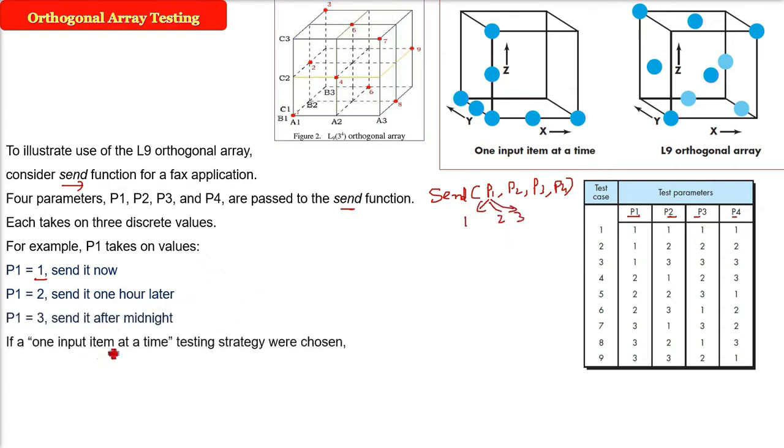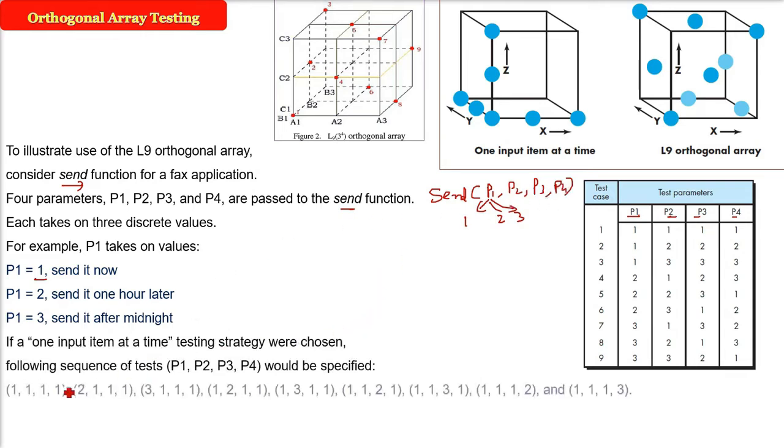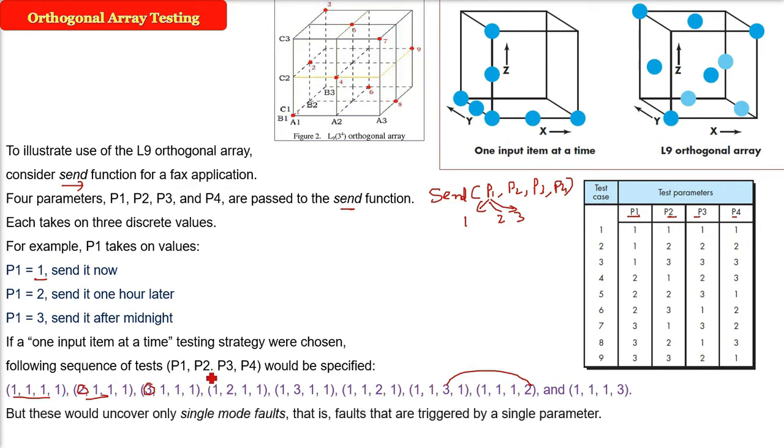So if one item at a time we take—that is just a simple way of representing it—p1, p2, p3, p4. Now if you see all these combinations, only one value is changed. Here it is 3, here it is 2. Only one value is changed because we are taking the policy of one input item at a time. And that will create immense pressure on the test cases. But these would only uncover only single mode faults.